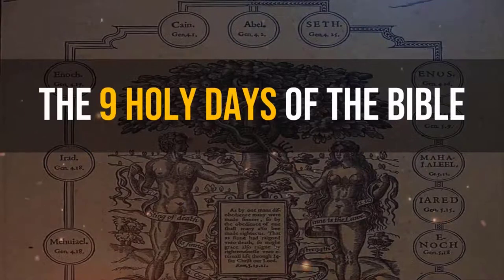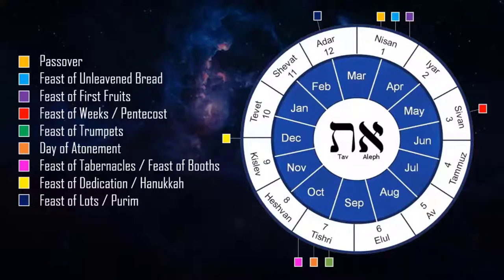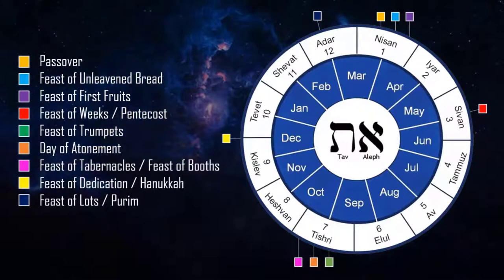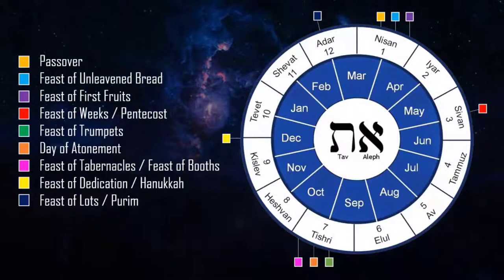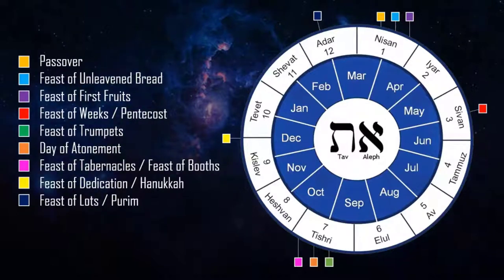We're going to take a look at the nine holy days of the Bible — the complete list of all the holy days written in the Old and New Testament. We've got Passover, the Feast of Unleavened Bread, Feast of Firstfruits, Feast of Weeks (also known as Pentecost or in Hebrew Shavuot), Feast of Trumpets, the Day of Atonement (also known as Yom Kippur), Feast of Tabernacles (also known as Sukkot), Feast of Booths or Feast of Tents, the Feast of Dedication (which is what we're studying today, also known as Hanukkah or Chanukkah), and then the Feast of Lots, also known as Purim.